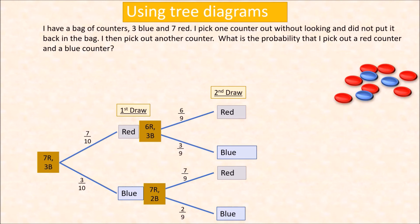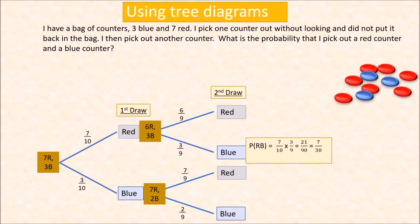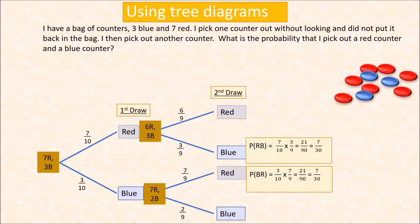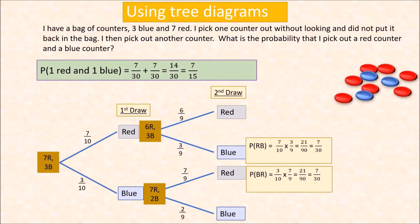We want the probability of having one red and one blue — either red first then blue, or blue first then red. Red first then blue: 7 over 10 times 3 over 9, which is 7 over 30. Blue first then red: 3 tenths times 7 over 9, which is 21 over 90, or 7 over 30. So the probability of getting one red and one blue is 7 over 30 plus 7 over 30, which is 14 over 30, or 7 over 15.